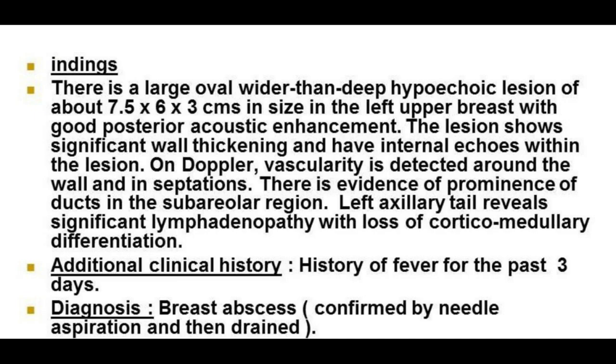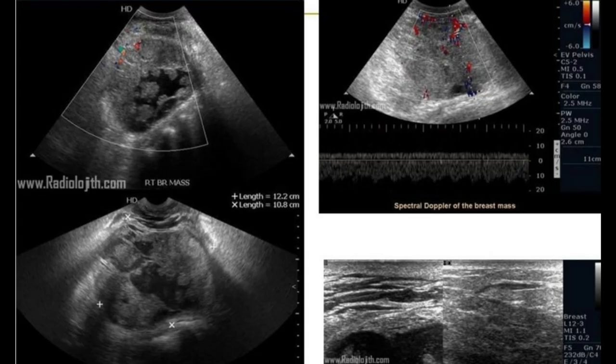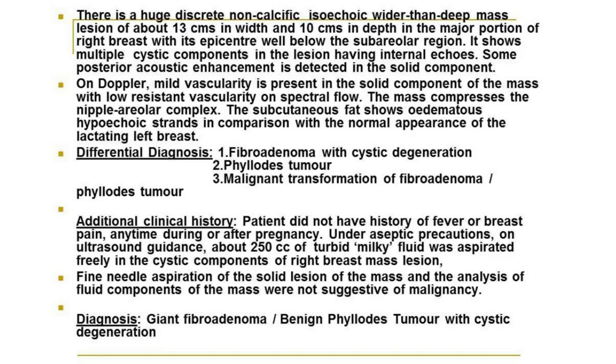The second picture reveals a huge discrete non-calcific isoechoic, wider-than-deep mass lesion with multiple cystic components. The cystic lesion has internal echoes. Posterior acoustic enhancement can be seen beneath the solid component. On Doppler, mild vascularity is detected in the solid component of the mass with very low resistant vascularity on spectral flow.